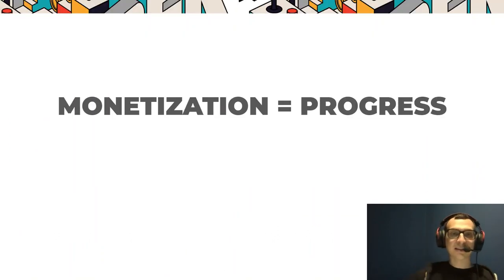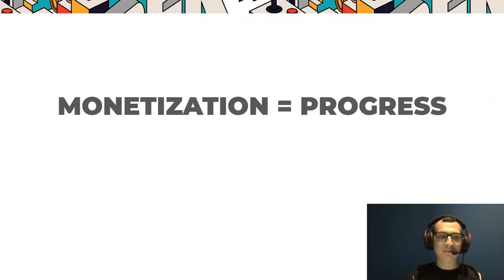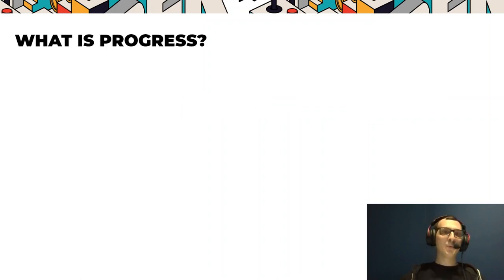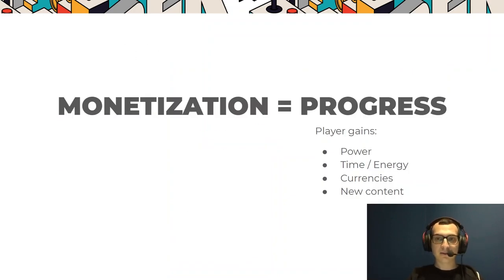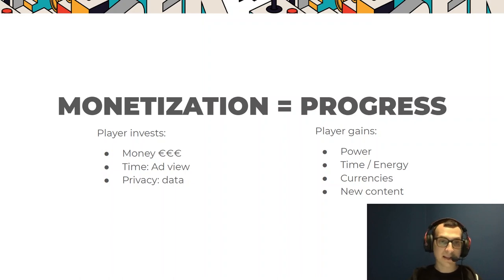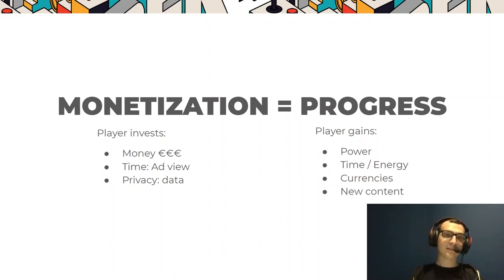Next, monetization design. The core of monetization is progress — the player's desire for progress is by far the safest way to monetize. Progress means how the player moves forward: more content, upgrading things, improving stats, gaining power, time, energy, currencies, and new content. On the other hand, the player invests something — money, time in the form of ad views, privacy, opinions, surveys, or data that you can collect and monetize.